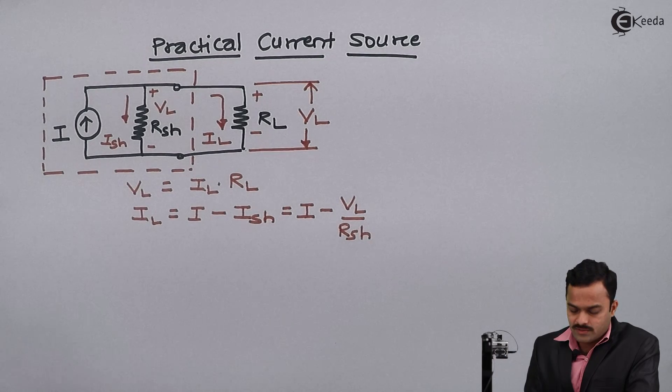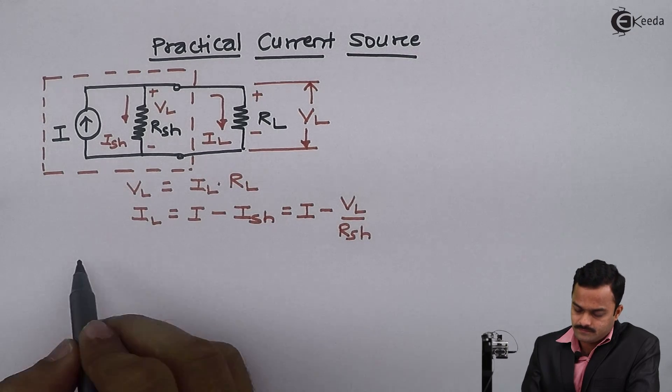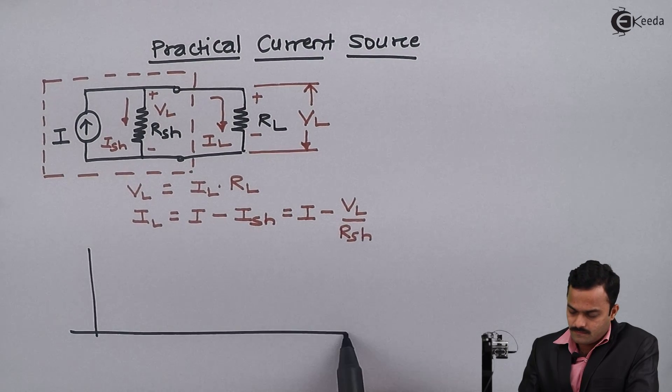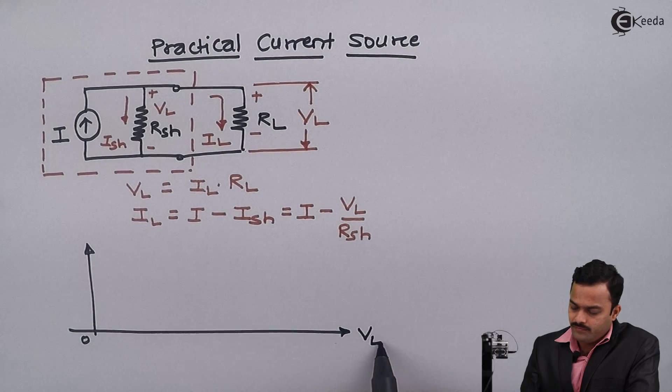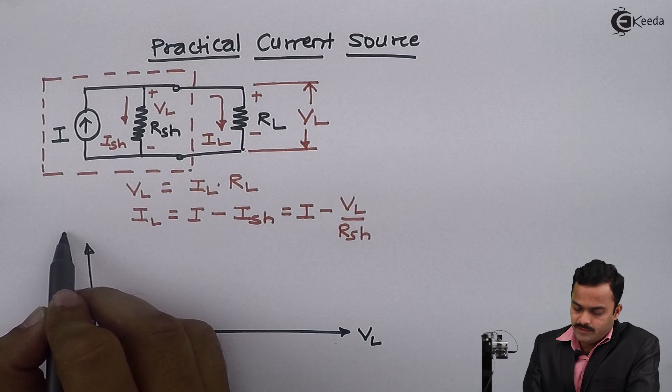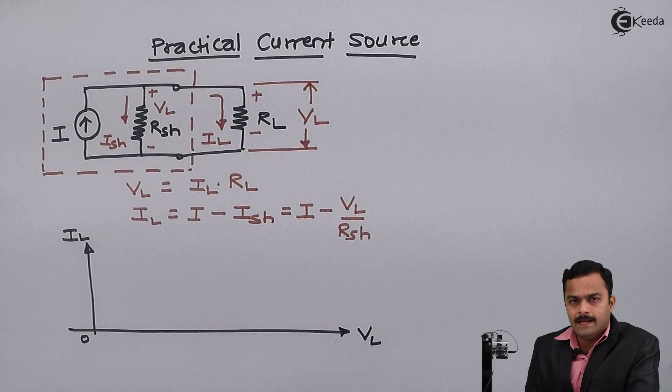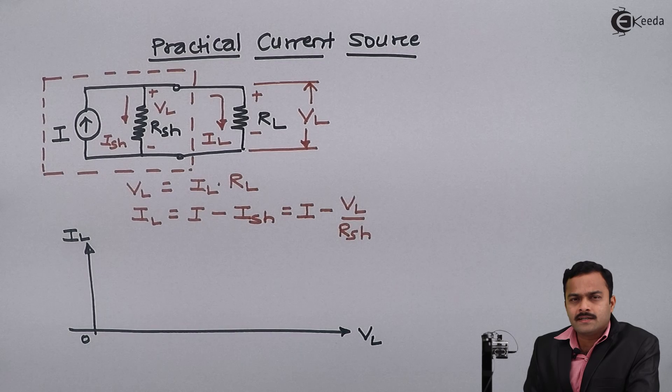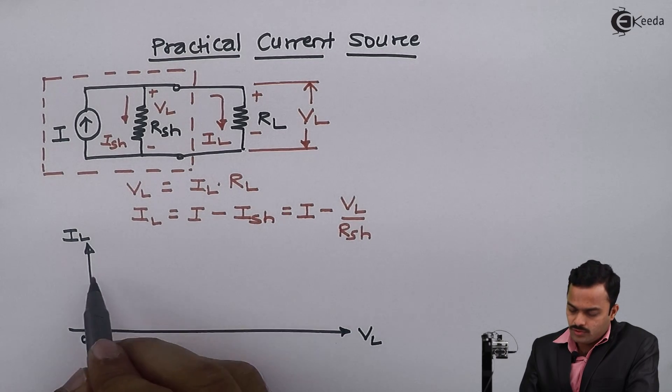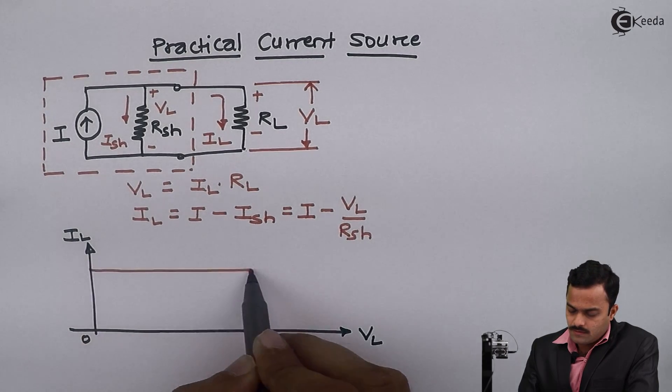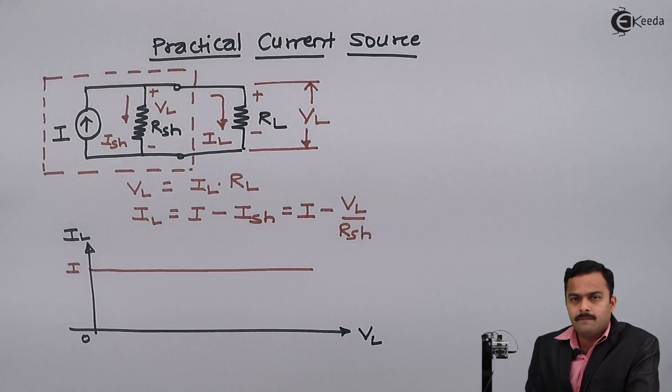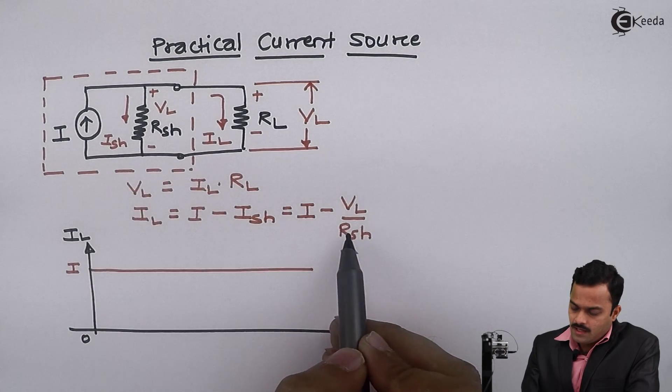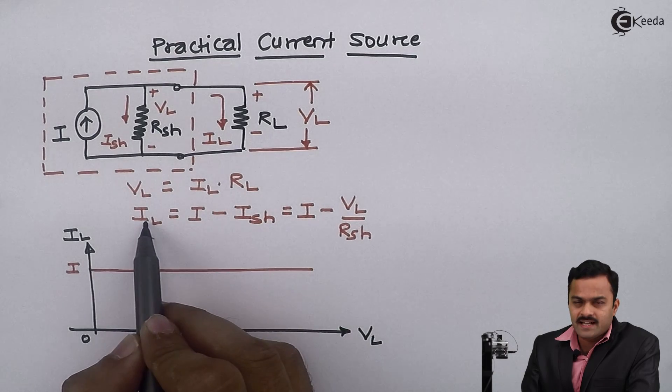Now suppose I want to draw VI characteristic. Again the independent variable will be VL and depends on VL I will have IL. Had it given a simple ideal current source, the IL will be same as I, but because of this Rsh I can say IL will